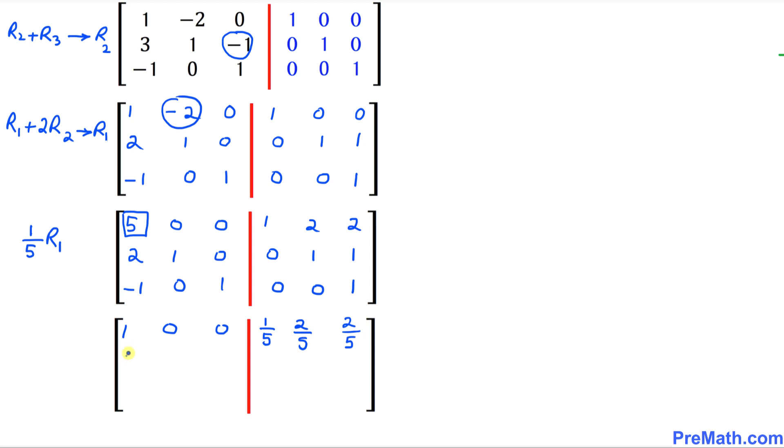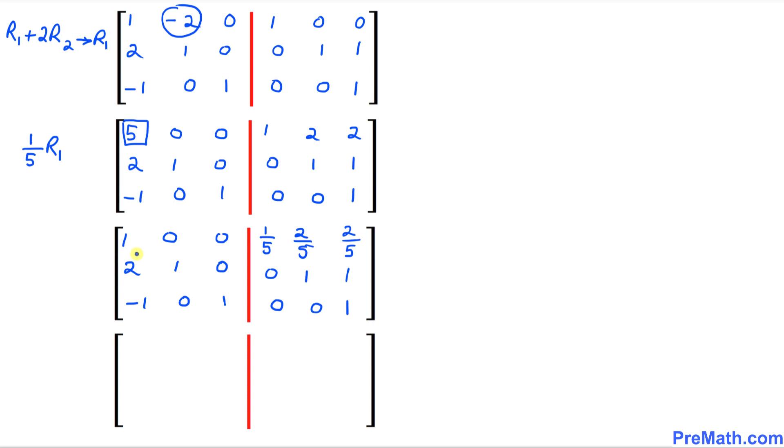The rest is going to stay the same: 2, 1, 0, 0, 1, 1, negative 1, 0, 1, 0, 0, 1.